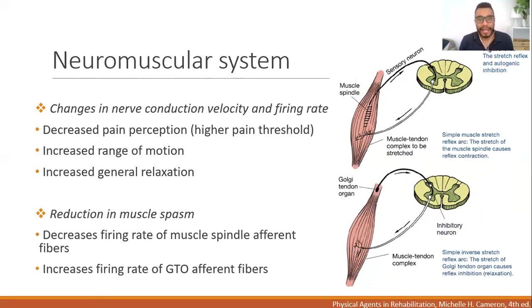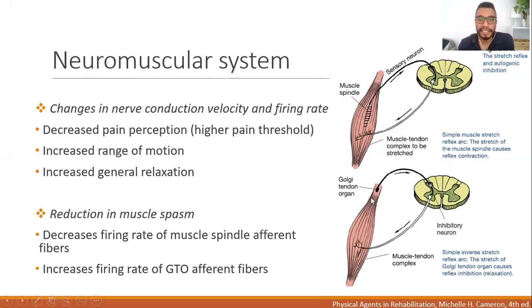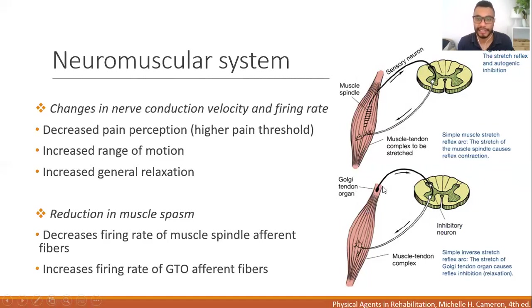When we apply heat, the muscle spindle is inhibited — there is a decreased firing of its afferent type II fiber. At the same time, the Golgi tendon organ is activated — there is increased firing of afferent fiber 1b. So the muscle spindle's activity is decreased and the GTO's activity is increased.